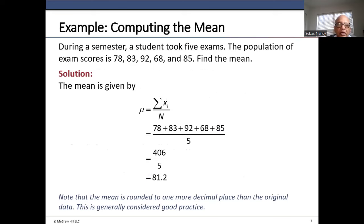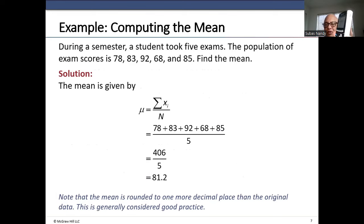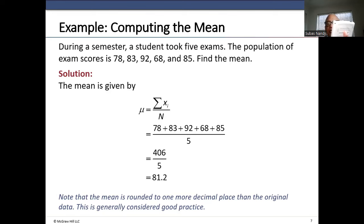We have five numbers: 78, 83, 92, 68, and 85. To find the mean using the calculator, first press the second button, then plus on top of enter, then number 4 to get 'clear all list.' Hit enter — it says done — meaning all calculator memory is cleared. Now press the stat button in the second row and select number 1, which is edit.